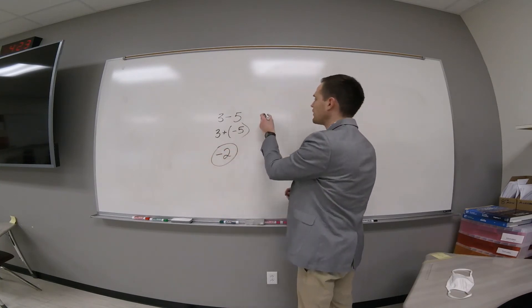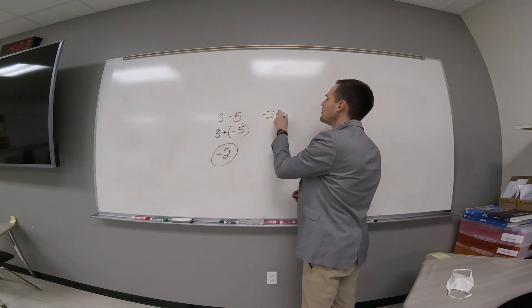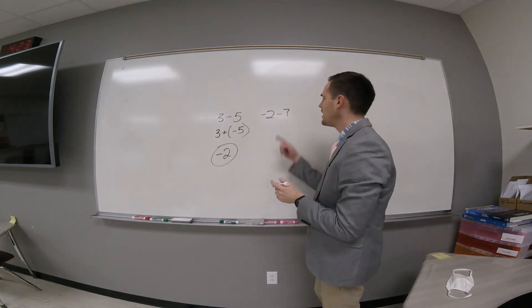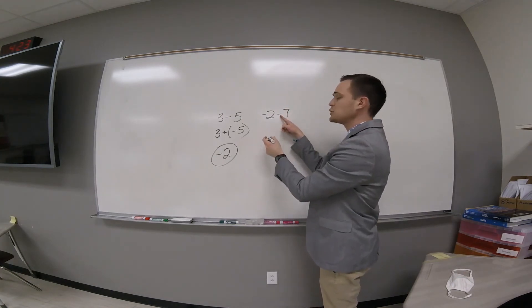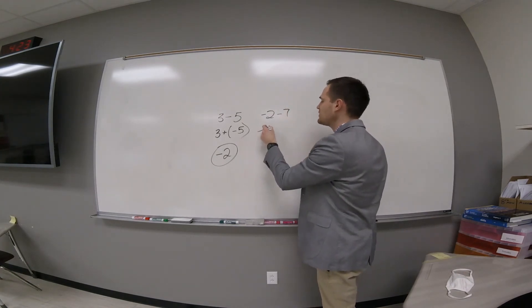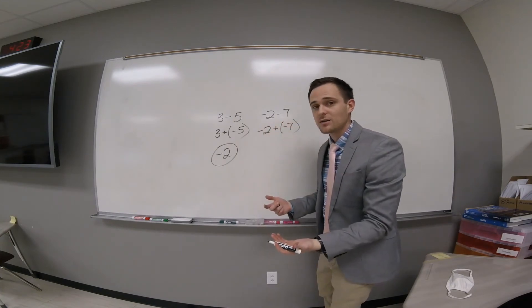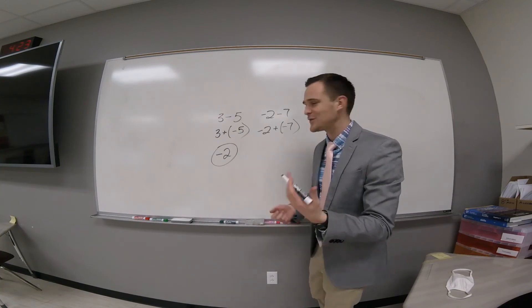That's what we mean by minus into a plus negative. Or this problem, of course. Negative two minus seven. We would say that minus turns into a plus negative. So we write negative two plus negative seven. Then we sing the adding song because you're almost done. Subtraction is so much fun.